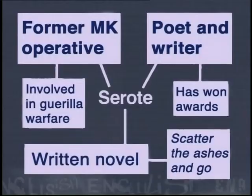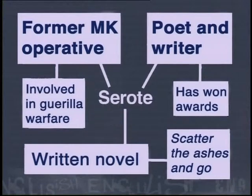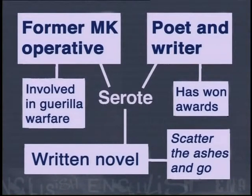In addition to helping you study for exams, using a mind map is a useful way of planning information to be used in an essay. If you had to write a biography on Sorote, you could go back to the original mind map and add more information. If you were going to turn this mind map into an essay, you could use each of your three main ideas as paragraphs and use the extra information to flesh out the ideas. Sorote is a former MK operative involved in guerrilla warfare, a poet and writer who has won awards, and he has written a novel entitled Scatter the Ashes and Go.